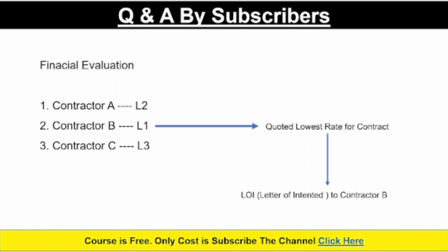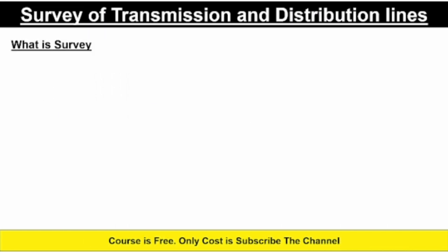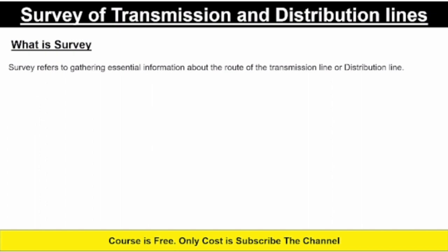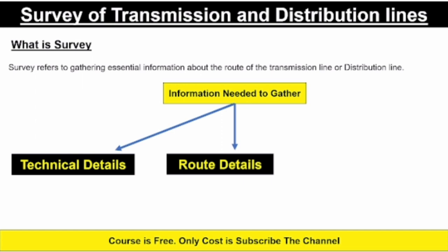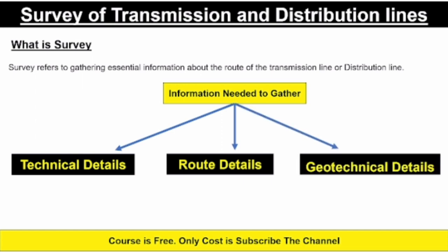I think both questions are answered successfully. Now we will go for today's topic: survey of transmission lines and distribution lines. Survey refers to gathering essential information about the route of a transmission line or distribution line. The information needed to gather can be divided into three categories: first is technical details, second is route details, and third is geotechnical details.